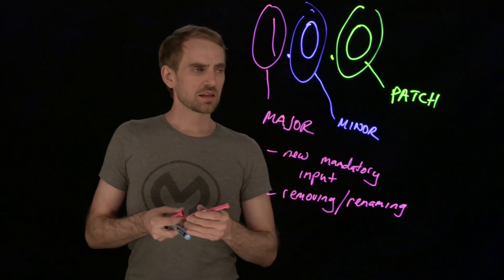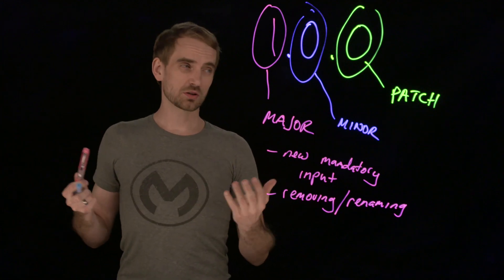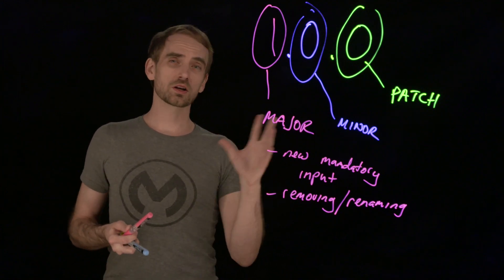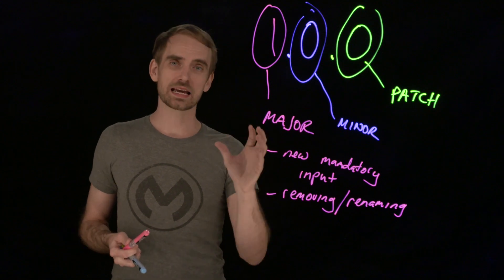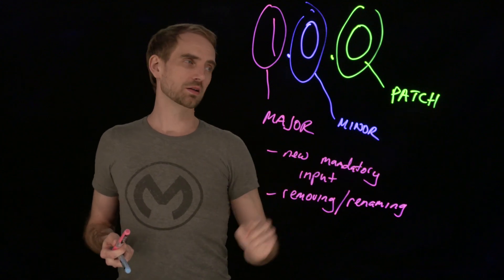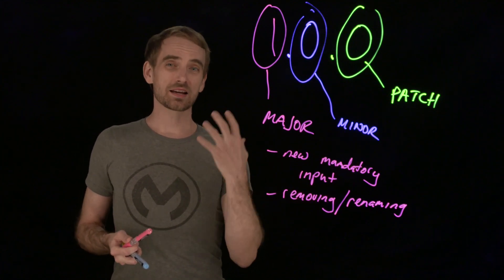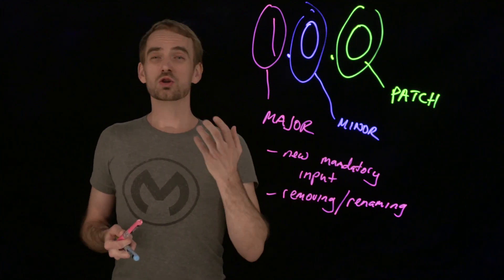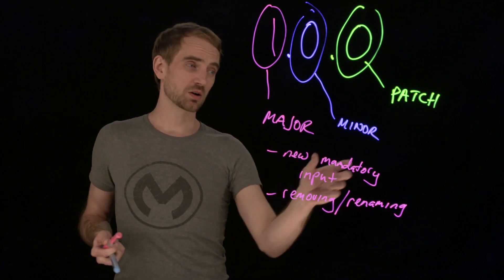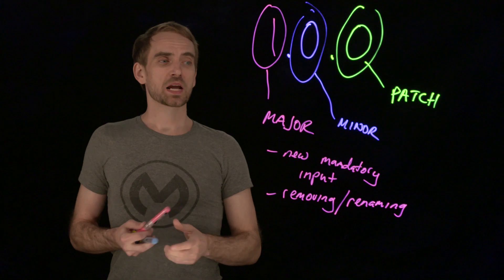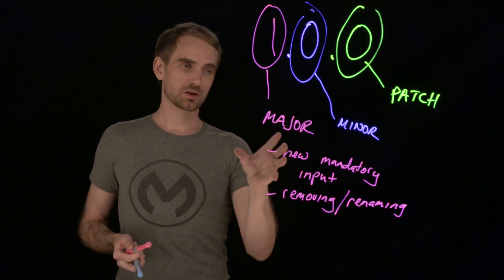Things that would not break include updating documentation — if you made a typo in some human-readable text of your API spec, you could roll that into a patch. I like to use the minor version for when I'm adding new features, such as new methods and resources. Those are new features, so I would increment the minor version. But I would do everything I can to avoid having to do a major version change.